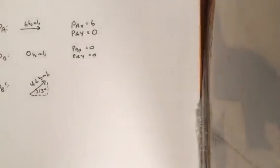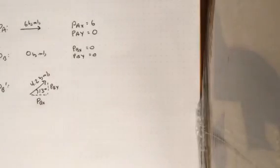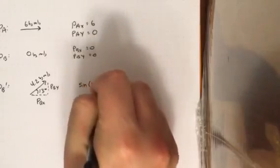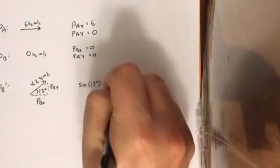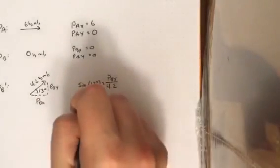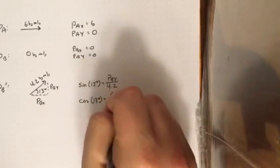So P B prime is going that direction, right? And we know that that direction has an angle of 13 degrees. And we found up here that that is 4.2 is the hypotenuse. So now this is where we have to do the work because we've got to find what P B X is and P B Y. So we're going to have to do some SOHCAHTOA here. So the sine of 13 degrees is going to equal the opposite, which is P B Y over the hypotenuse. And the cosine of 13 degrees is going to equal the adjacent divided by the hypotenuse.